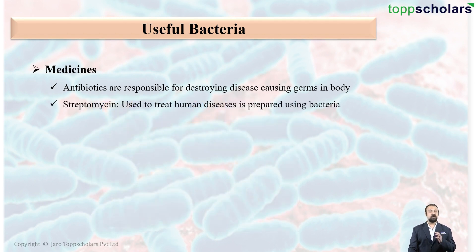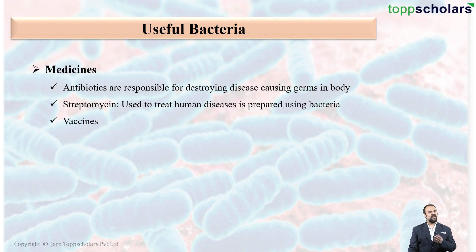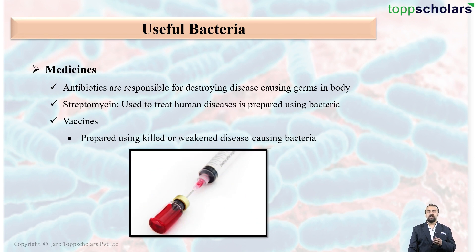For example, streptomycin is used to treat human diseases and this streptomycin is prepared using bacteria. Vaccines are also prepared using bacteria. These vaccines usually contain the bacteria itself — either a killed bacteria or a weakened disease-causing bacteria — which is introduced into the human body.